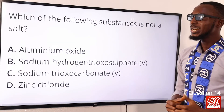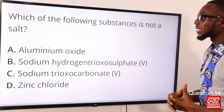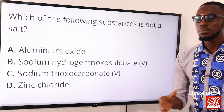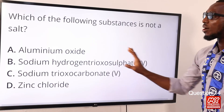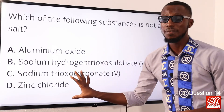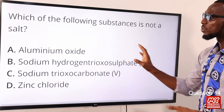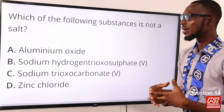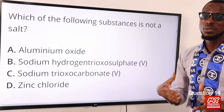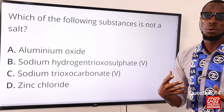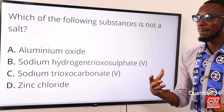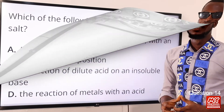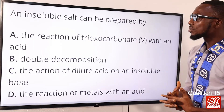Question fourteen: which of the following substances is not a salt? Among the options provided, the correct option is aluminium oxide, also referred to as alumina. It is a white powder, almost insoluble in water, and it is amphoteric in nature. So the correct option is option A for aluminium oxide.